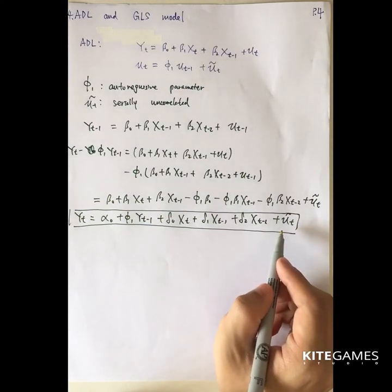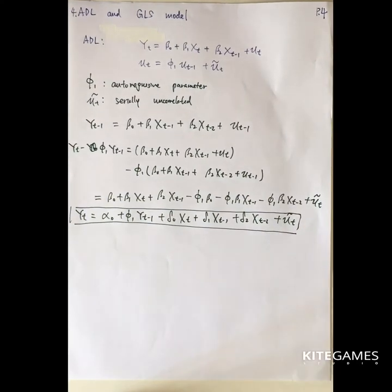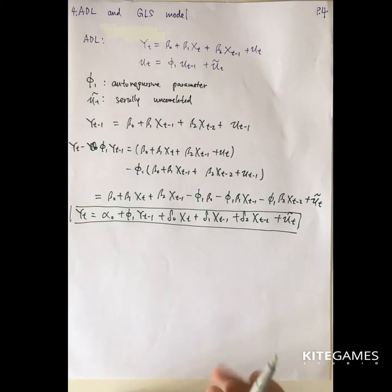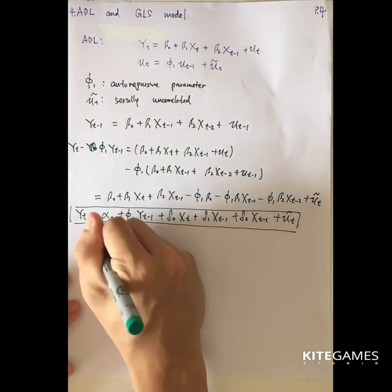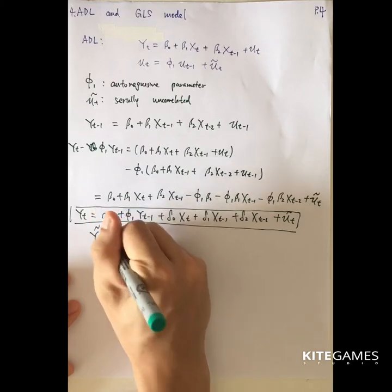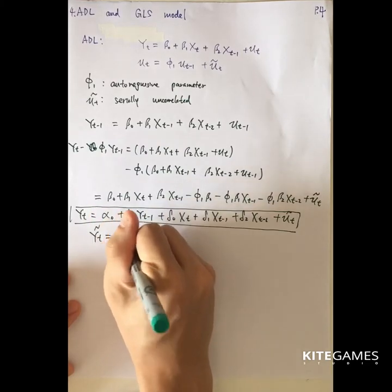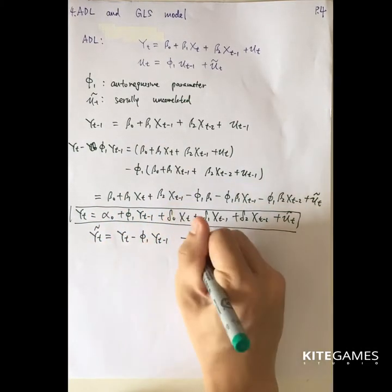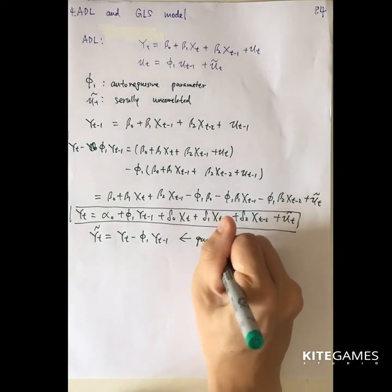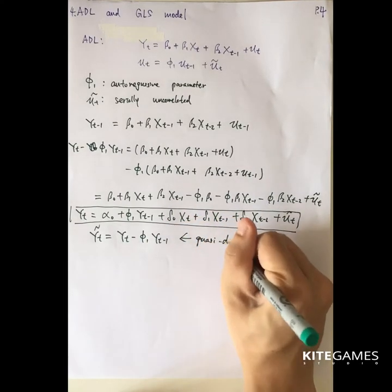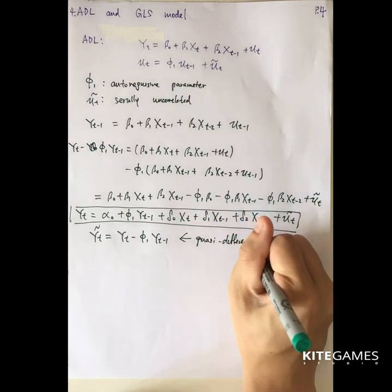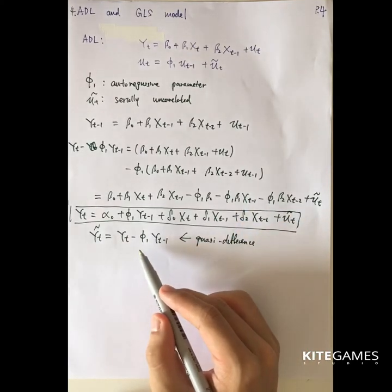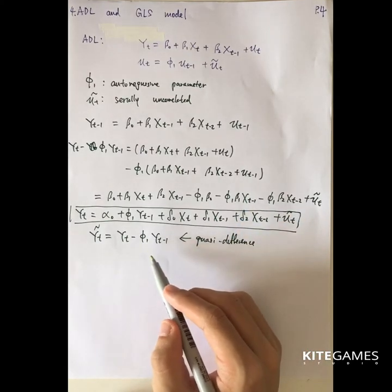Here y-tilde_t equals yt minus phi_1 times yt minus 1. We call this the quasi-difference, because it is not a true difference — you subtract phi_1 times the past value rather than the past value itself.